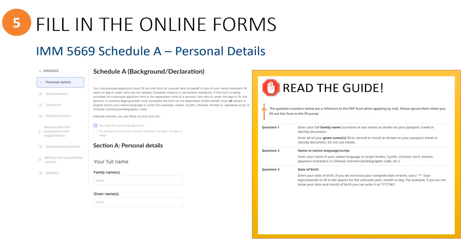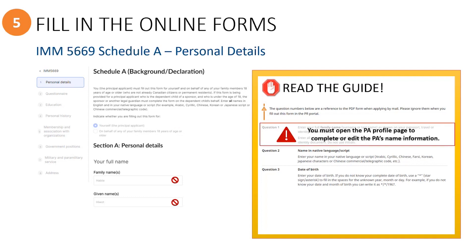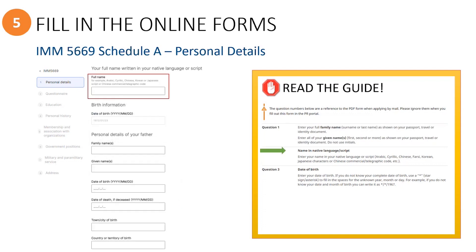We'll explain more about the principal applicant's declaration form in a later segment. The first bit of information is auto-generated by the system, because the program assumes that the information being entered into this particular Schedule A form belongs to the principal applicant and not their dependent. Under Schedule A Personal Details, the name information is also auto-filled based on the information inserted into the principal applicant's profile page.